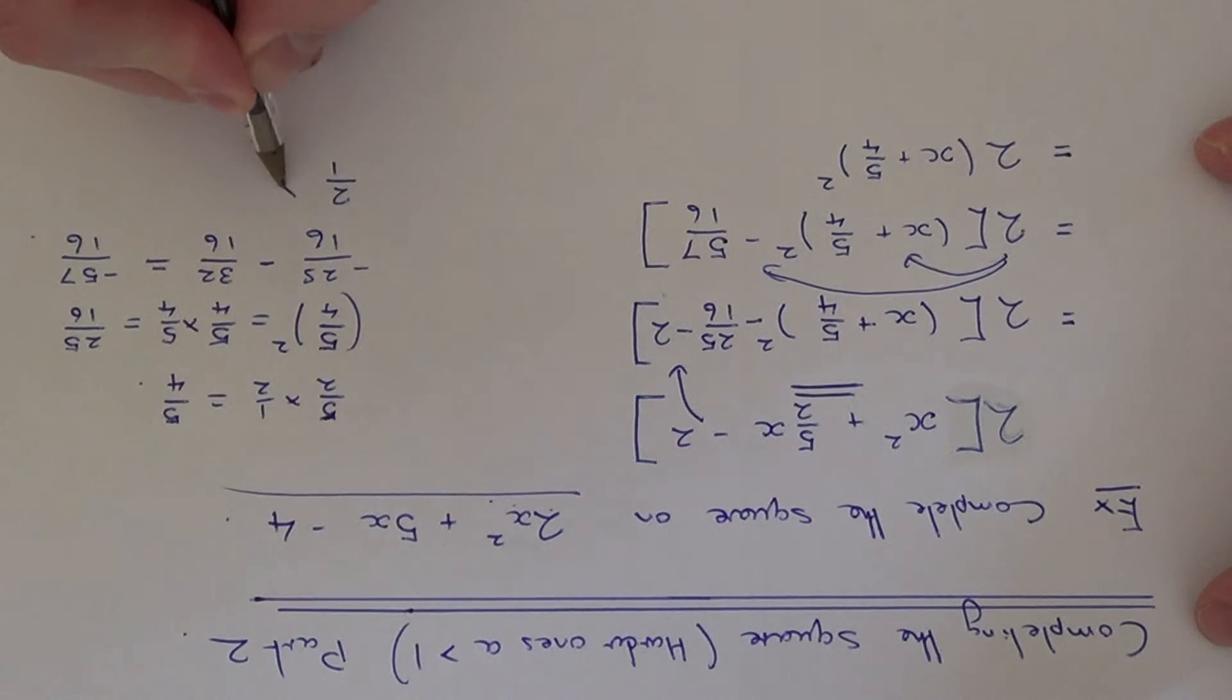So again just work this out on the side of your page. So 2 times 57 is 114, 1 times 16 is 16. So we can cancel this fraction down to give us 57 over 8.